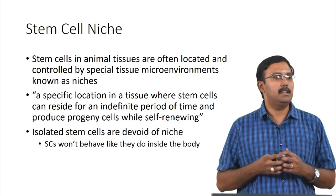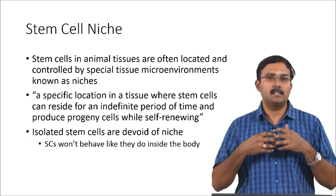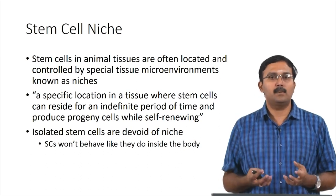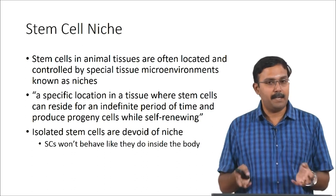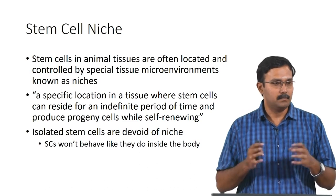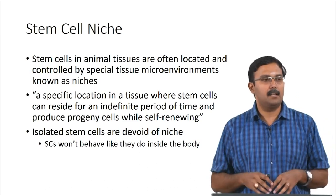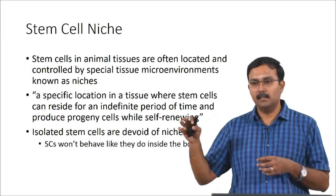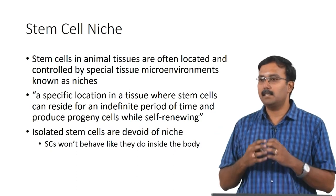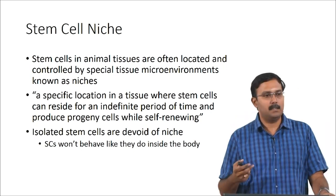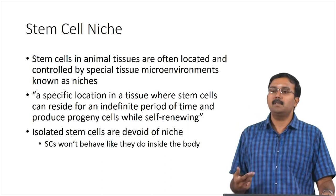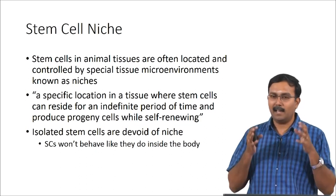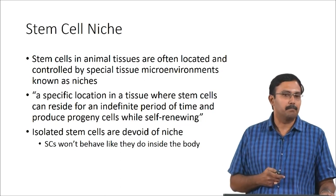Stem cells are present in the body in a place called the stem cell niche — a micro-environment which is well controlled to maintain the stemness of the cells. This is a specific location where cells can reside for an indefinite period without differentiating. Through asymmetric division, the cell fated towards differentiation leaves the stem cell niche, while the cell maintaining multipotency remains in the niche. This is one of the issues when handling stem cells outside the body — we do not have the stem cell niche, so the stem cells do not behave the same way and certain properties are lost.